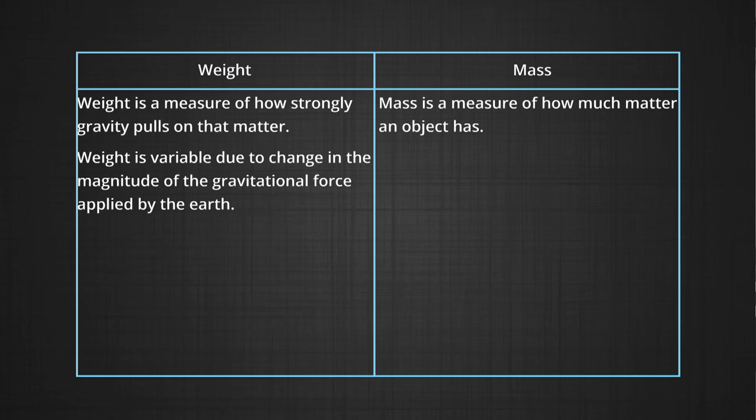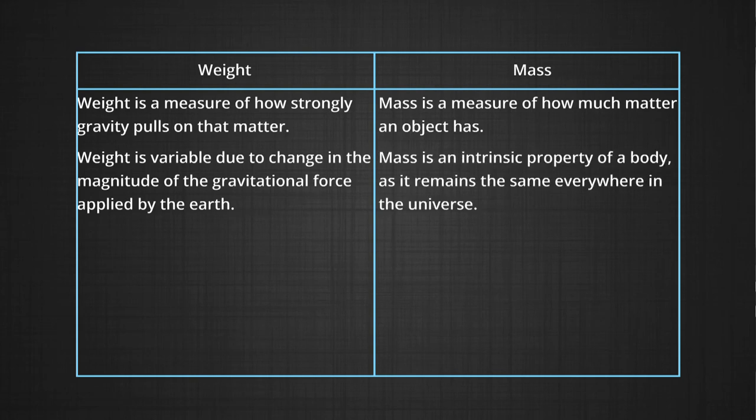Weight is variable due to change in the magnitude of the gravitational force applied by the earth, while mass is an intrinsic property of a body as it remains the same everywhere in the universe. Weight, represented by w, equals mass into gravitational acceleration g, while mass is denoted by capital M.